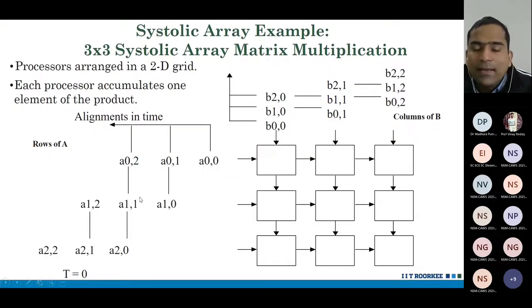In a convolutional layer, we have inputs and we have weights. Usually weights come from the top, and inputs come from the left. And output, we multiply input with the weight, we get the output. That output stays here in the PE. Output stays stationary. That's why it's called output stationary.